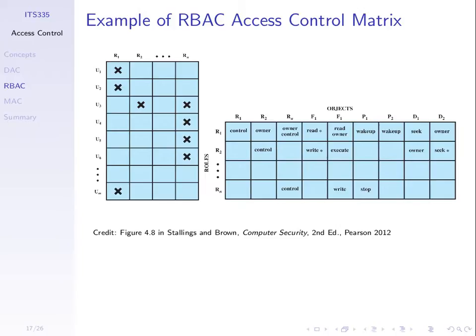The objects in role-based access control don't have to be files. I can control who can access a particular software process running on my computer, or who can access a physical hard disk. In this matrix example, roles are mapped to objects with different access rights — on a disk we can do different operations like seek or be the owner; on files we have read, write, and execute. These are just examples of access rights; we may have others specific to our system.